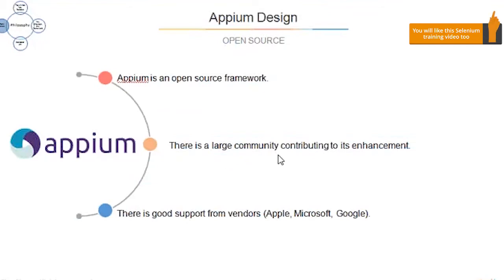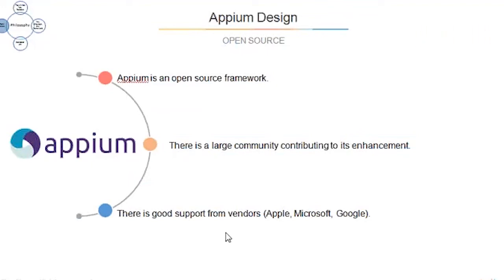Appium is an open source framework, which is the best part. There is a large community contributing to its enhancements, so if you face any issues you will get answers easily from the community. There is also good support from vendors — Apple, Microsoft, and Google. As Google launches a new operating system, they make sure their automation tools work perfectly fine with it.